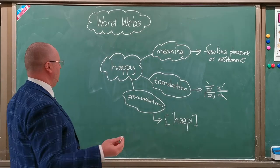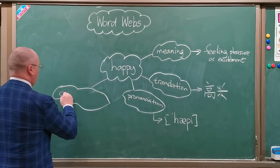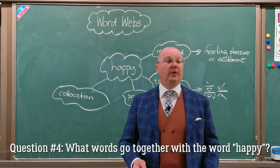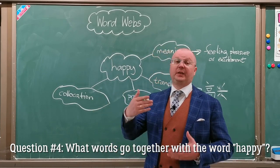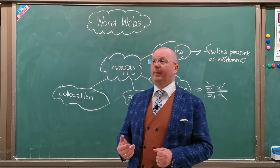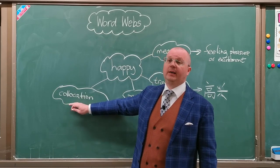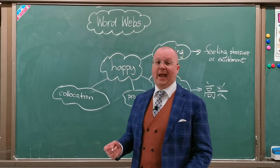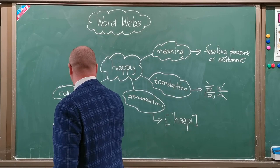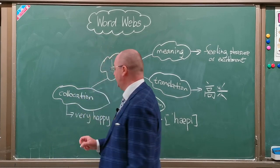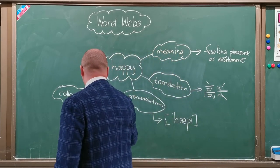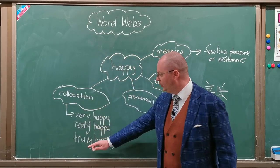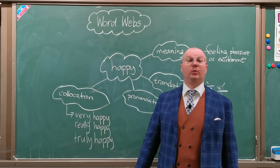What's next? Next could be collocations. A collocation is two or more words that go together. It's something that sounds natural to native speakers but may be a bit tricky for L2 learners — second language learners. So for example, the collocation for the word 'happy' would be 'very happy.' We often say 'very happy,' or 'really happy.' These words always go together with 'happy.'